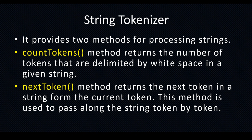It provides two methods for processing strings. Once you start writing a program using string tokenizer you need to use these two methods: one is countTokens and the second one is nextToken. The countTokens method returns the number of tokens that are delimited by white space in a given string. It is very nice to know how many words you entered — every time you can change the length of the sentence and it automatically knows how many tokens are available.